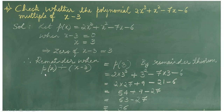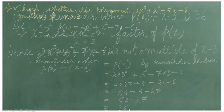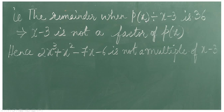Here, the remainder when p of x is divided by x minus 3 is not equal to 0. That is, the remainder is 36. This implies x minus 3 is not a factor of p of x. Hence, 2x cube plus x square minus 7x minus 6 is not a multiple of x minus 3.